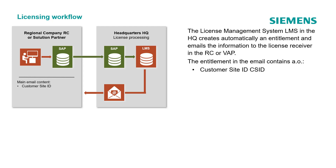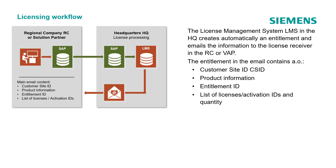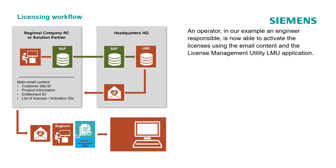Each installation at a customer site needs a valid license and is identified by the Customer Site ID, which is a unique identification generated in LMS. The entitlement also contains the product information, the entitlement identification, and the list of licenses or activation identifications with quantity. An operator — in our case an engineer responsible — can use the content of the email to activate the license or licenses on the customer site machine or engineering PC for a specific engineering tool using the License Management Utility (LMU) application.